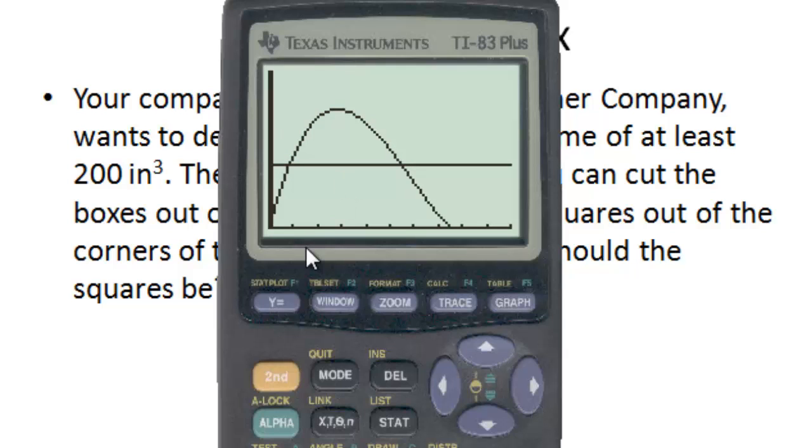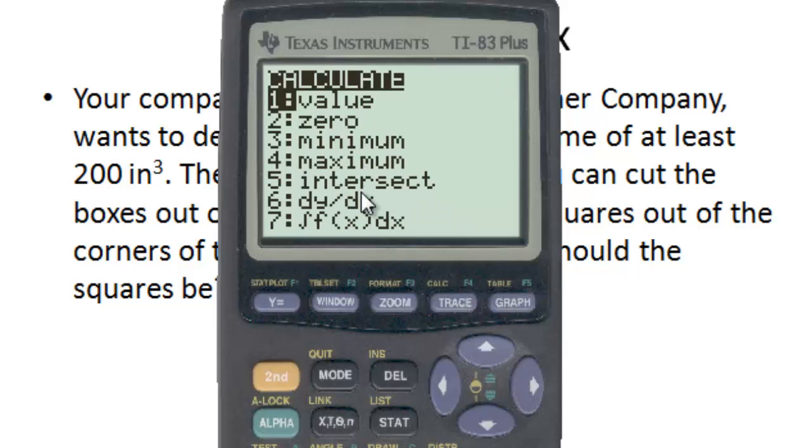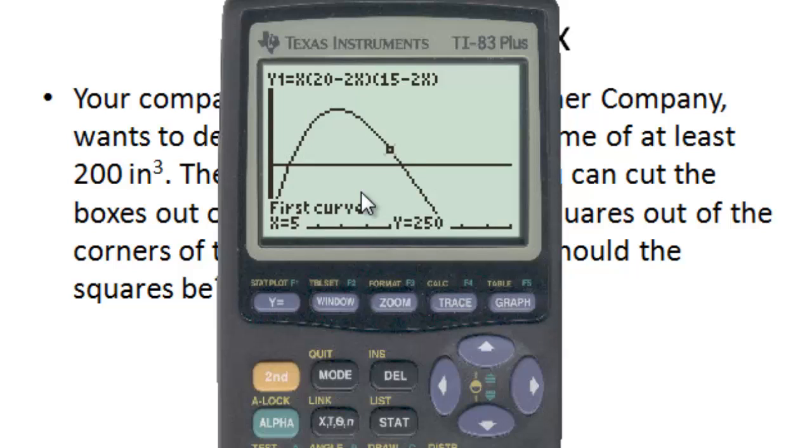So we go 2nd, calc, and 5 for intersect. Then it's going to ask you for the first curve. It's on one of the curves, so we'll accept that. Enter. It jumps to the second curve, so we'll hit enter, and then it asks for a guess. So we'll hit enter again, and then it gives us the intersection. This is the right-hand intersection at x equals 5.48 and y is 200. That line is 200, so we know it has to be 200.